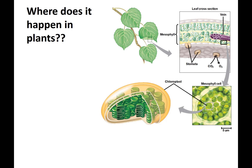Where does photosynthesis happen? Focusing on plants, you probably know that the chloroplast is the organelle where photosynthesis happens. When you look at a chloroplast, notice that there are two membranes — an outer membrane and an inner membrane. Hopefully that rings some bells: it looks a lot like mitochondria. Remember that chloroplasts were once free-living organisms.